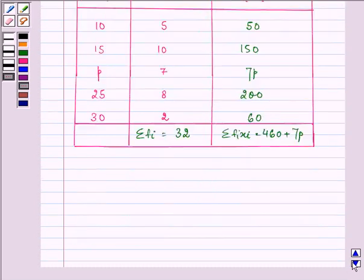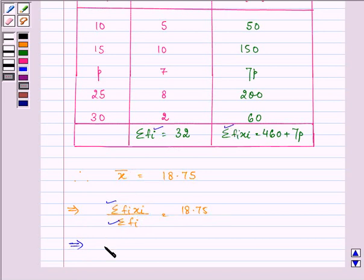Now further we are given that mean is equal to 18.75. We know that the formula for mean using this method is summation of FI into XI upon summation of FI. We just need to substitute these values: 460 plus 7P upon 32 equal to 18.75.